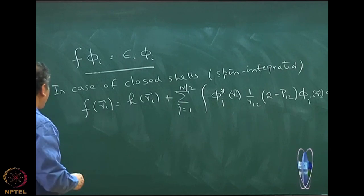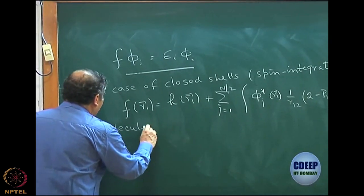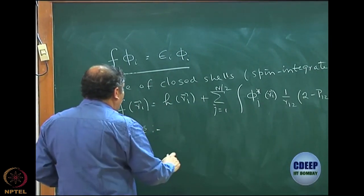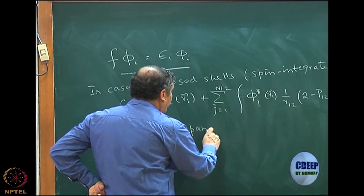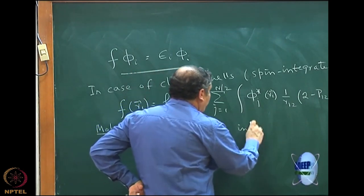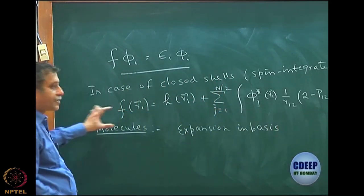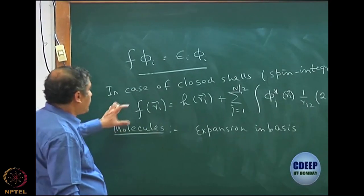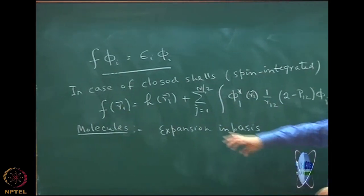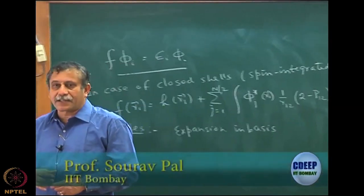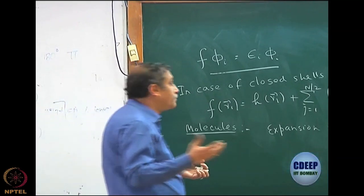For molecules, the exact solution in coordinate space is difficult, so one has to adopt an expansion in terms of a basis. Instead of solving in coordinate space, we solve by expanding the spatial orbitals in terms of a basis, because the spatial orbitals are my unknowns. The basis is a set of known functions, so the unknowns become the expansion coefficients — these are numbers.